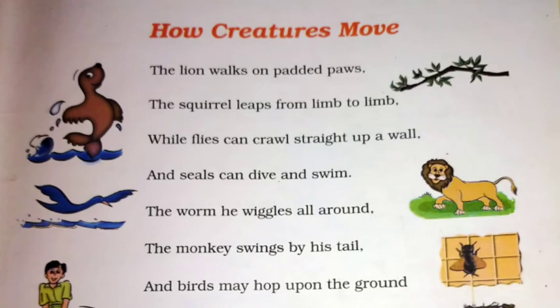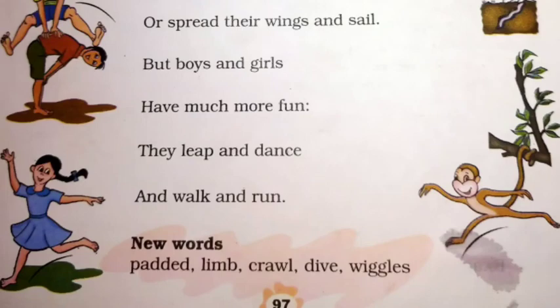The worm he wiggles all around. The monkey swings by his tail. And birds may hop upon the ground. Ours spread their wings and sail. But boys and girls have much more fun — they live and dance and work and run.